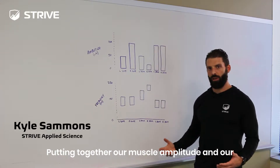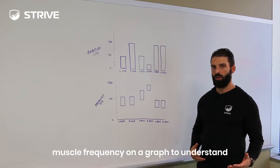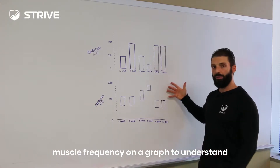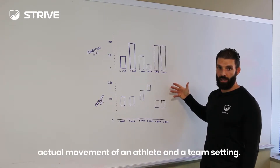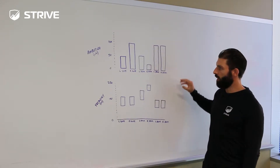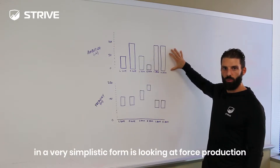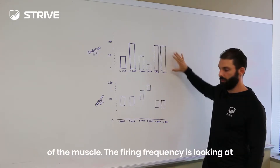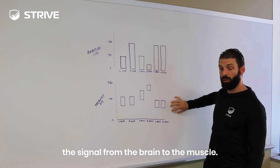Putting together our muscle amplitude and our muscle frequency on a graph to understand actual movement of an athlete in a team setting. Amplitude, in a very simplistic form, is looking at force production of the muscle. The firing frequency is looking at the signal from the brain to the muscle.